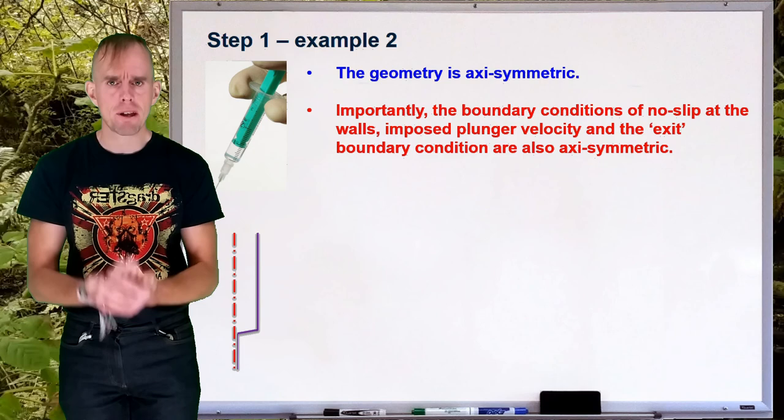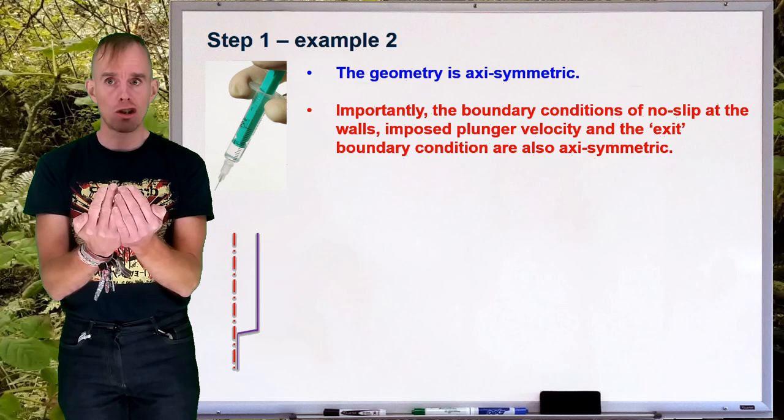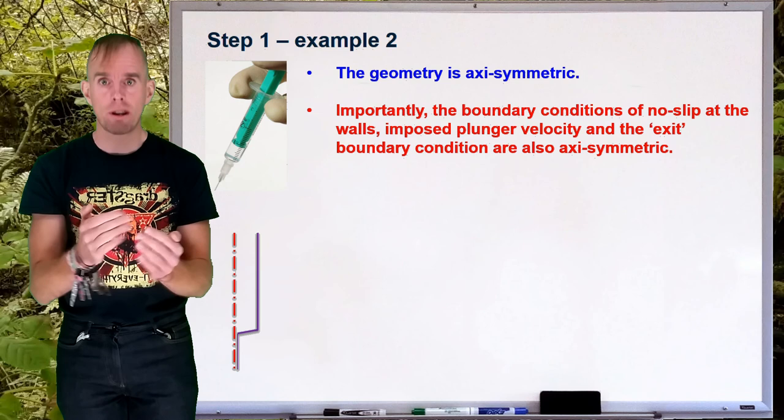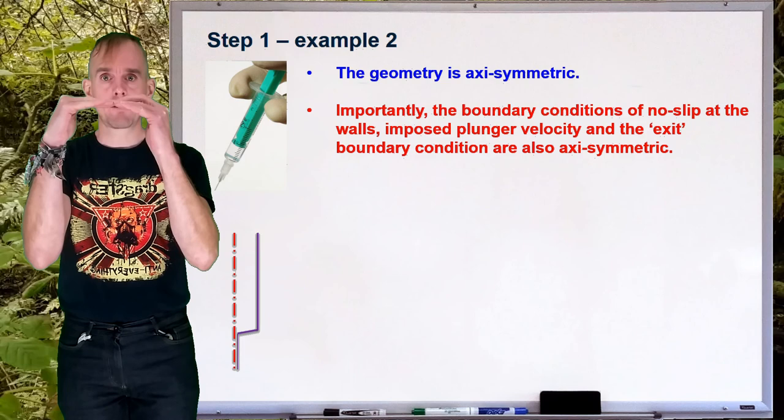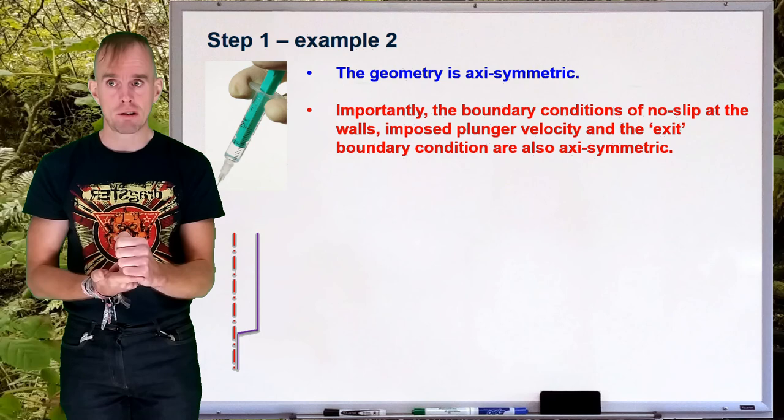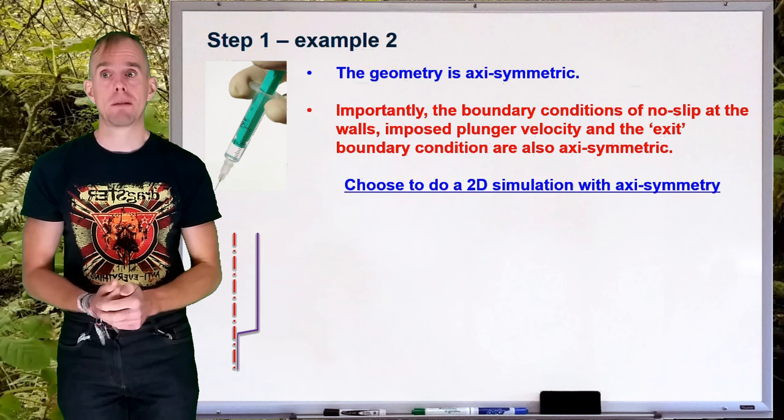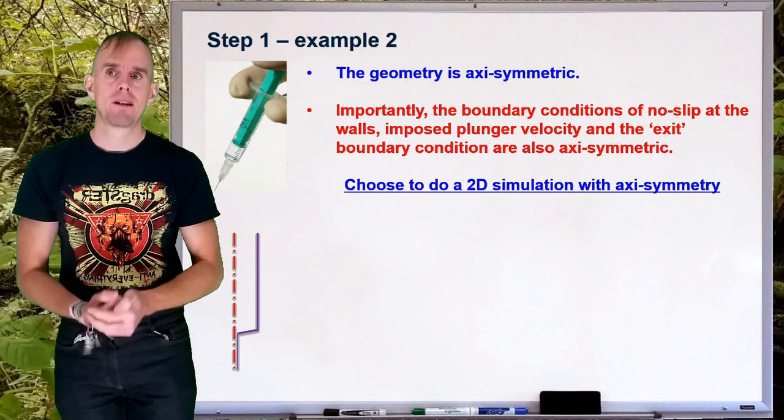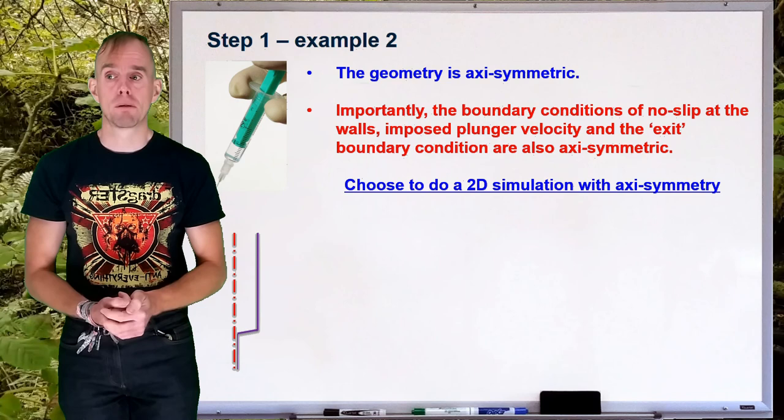So the geometry is symmetric, but are the boundary conditions symmetric? Because we can only fully exploit symmetry if both are true. If we think about the boundary conditions, on the walls of the syringe, the interior walls, you have a no-slip boundary condition, and that's symmetric. You have an outlet at the base of the syringe, which happens to be on that symmetry line. And you have an imposed velocity by the plunger, again, that is symmetric about the axis. So our geometry is symmetric, and our boundary conditions are symmetric. So axisymmetry is the right choice, and furthermore, we can choose a 2D simulation. This greatly simplifies the simulation. It greatly cuts down the number of equations that you're solving, which makes it faster and more tractable on, for example, a moderate laptop.